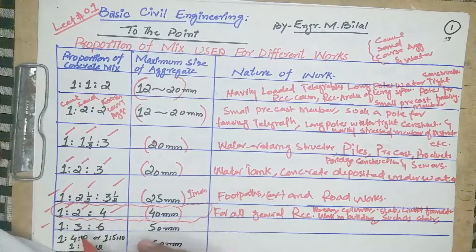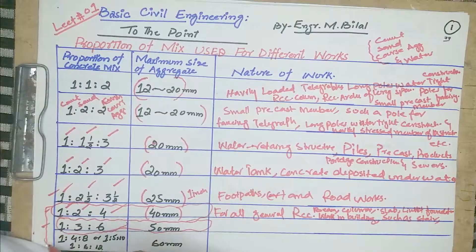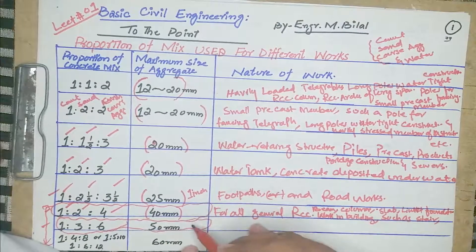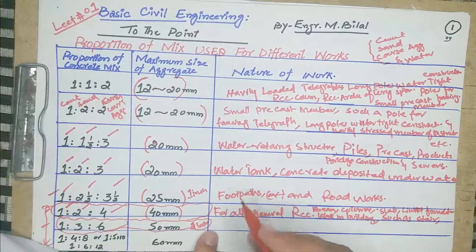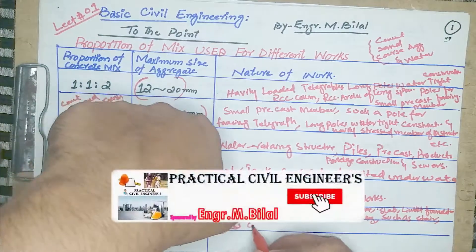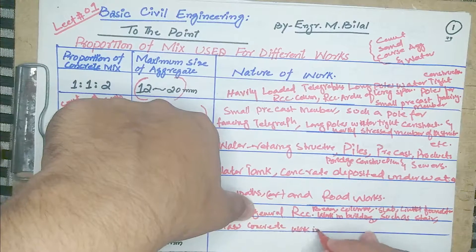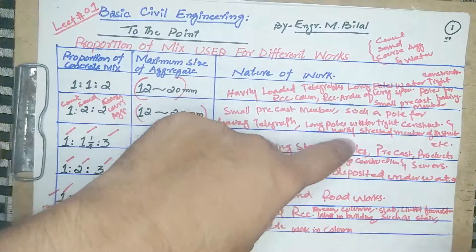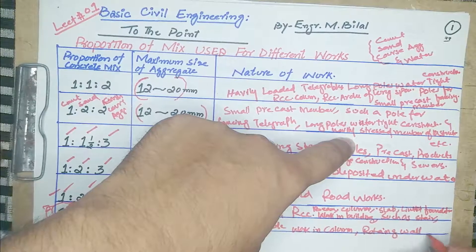The sixth proportion is 1:3:6, which is commonly used in our daily routine. The maximum aggregate size for this proportion is 50 mm, which is two inches. This type of concrete is used in mass concrete work, columns, retaining walls, etc.